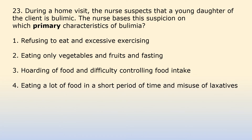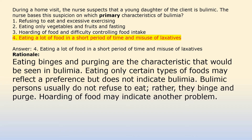During a home visit, the nurse suspects that a young daughter of the client is bulimic. The nurse bases this suspicion on which primary characteristics of bulimia? Option 1: Refusing to eat and excessive exercising. Option 2: Eating only vegetables and fruits and fasting. Option 3: Hoarding of food and difficulty controlling food intake. Option 4: Eating a lot of food in a short period of time and misuse of laxatives. Answer 4: Eating binges and purging are the characteristics seen in bulimia. Eating only certain types of foods may reflect a preference but does not indicate bulimia. Bulimic persons usually do not refuse to eat; rather, they binge and purge. Hoarding of food may indicate another problem.